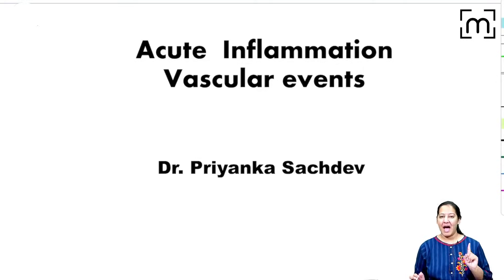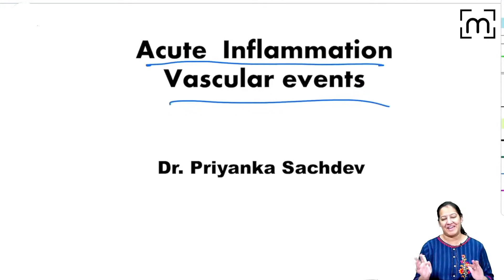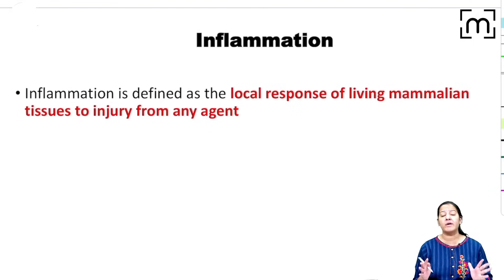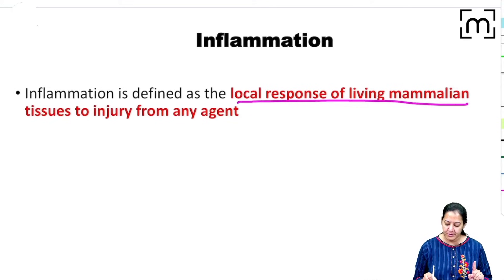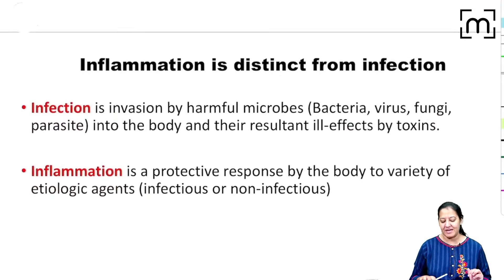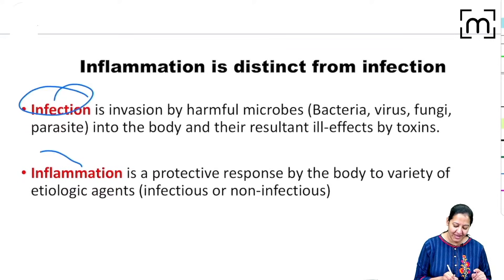In this session I am going to discuss acute inflammation, specifically the vascular events of acute inflammation. Before starting the topic, you must have an overview of what inflammation is. Inflammation is the local response of the living mammalian tissue to an injury from any agent — it is actually a defense mechanism.